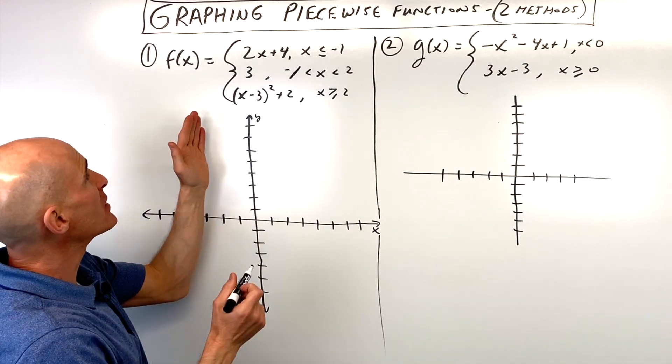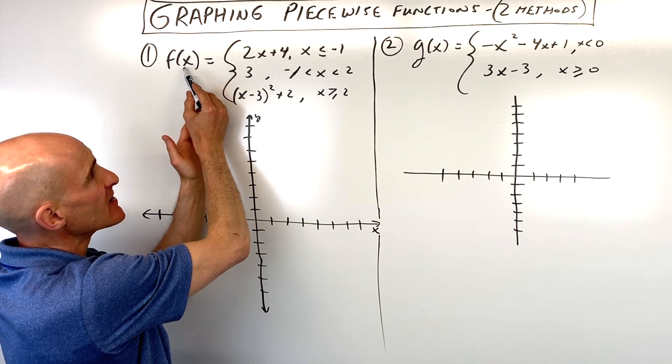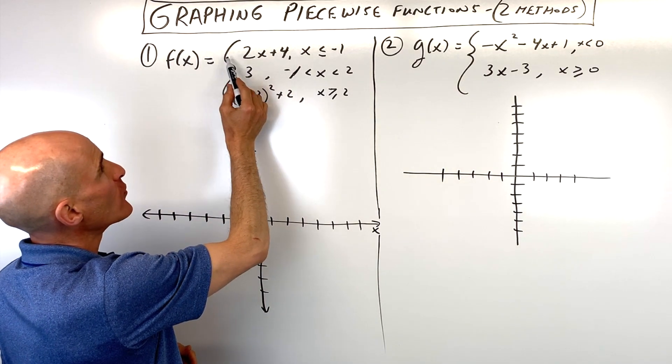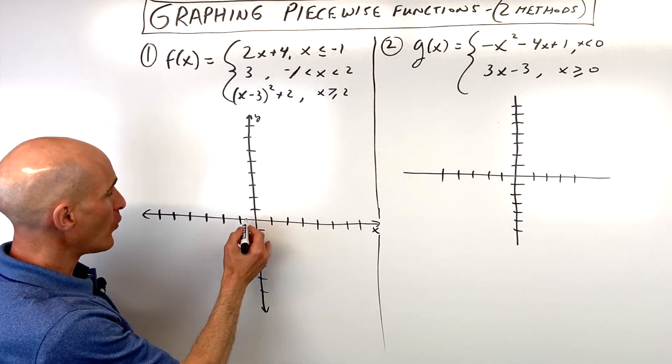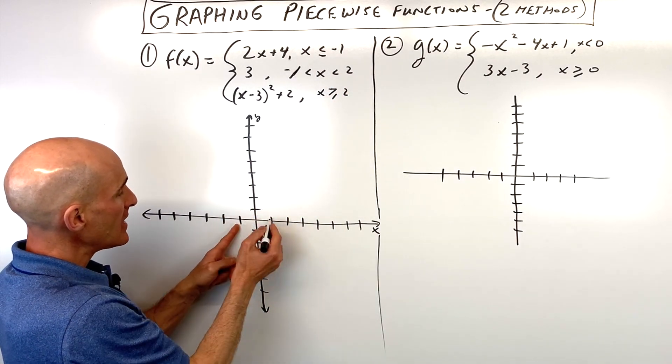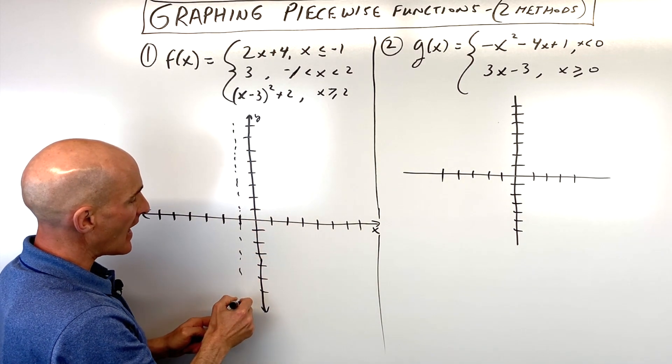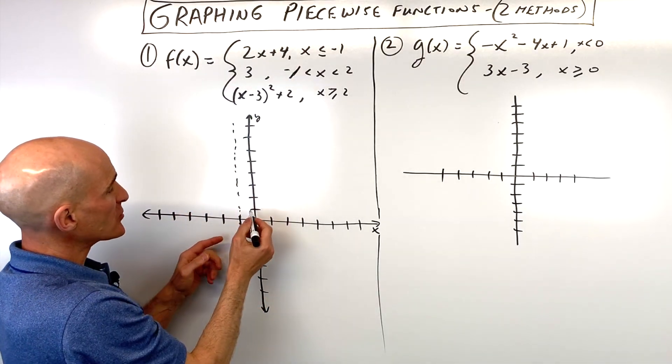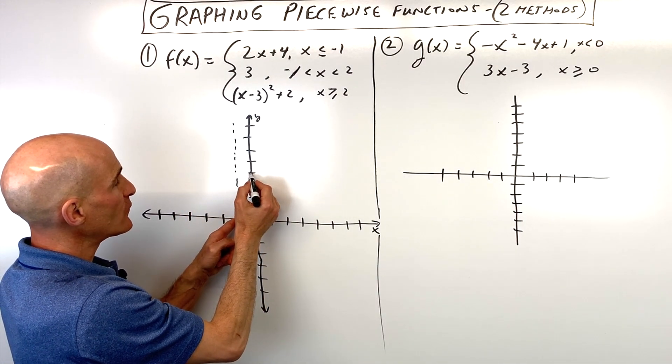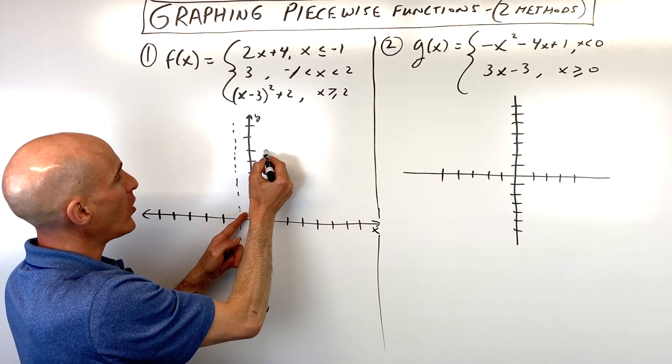So I'm going to show you a method here where if we're graphing, this is like y equals, f of x is like our y or our output. We're graphing y equals 2x plus 4, but only when x is less than or equal to negative 1. So what you can do if you want is go over here to where x is negative 1. I'm just going to draw like a dotted line. You can erase this later if you want. And what we're going to do is we're going to graph the line y equals 2x plus 4. It has a y-intercept of 4, it has a slope of 2, which means we're going up 2 over 1.